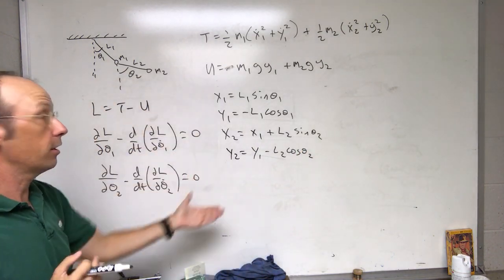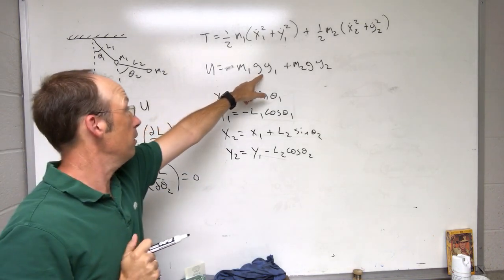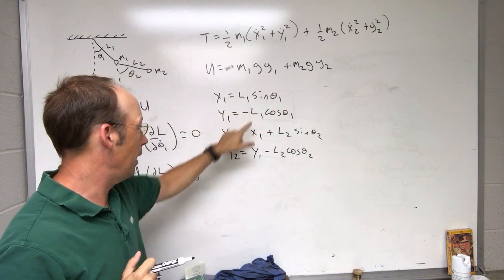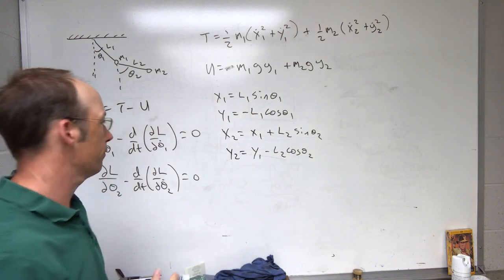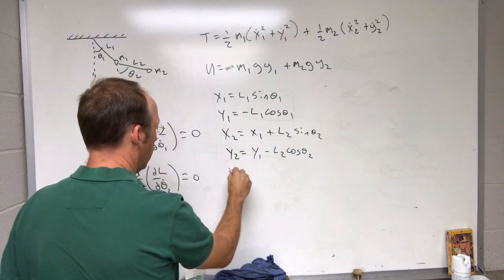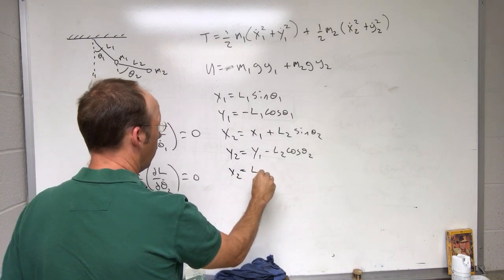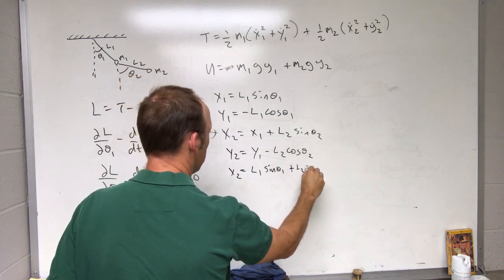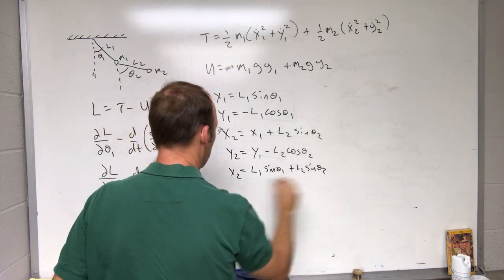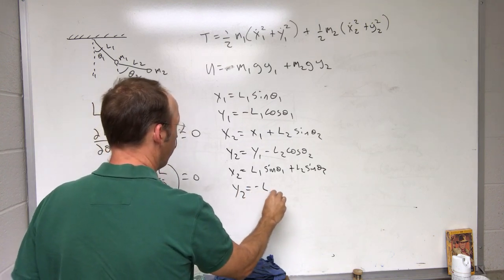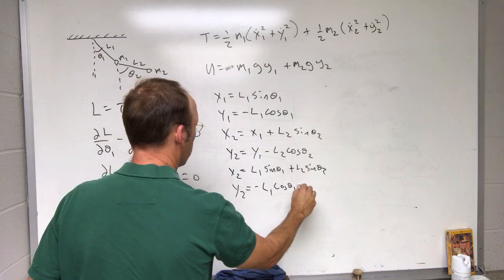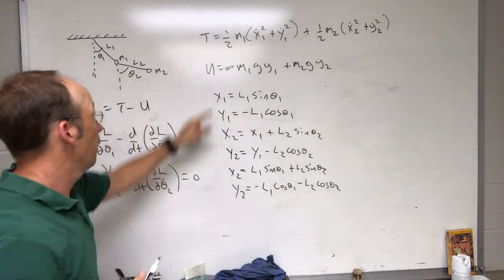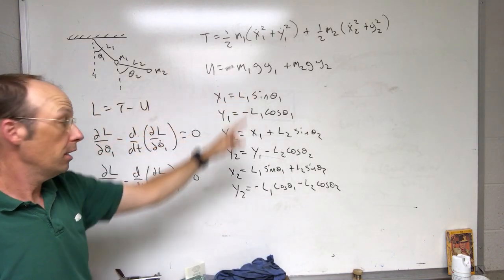Substituting, I can write these out fully: x2 equals l1·sin(theta 1) plus l2·sin(theta 2), and y2 equals negative l1·cos(theta 1) minus l2·cos(theta 2). So I have the Cartesian coordinates for both masses fully expressed in terms of theta 1 and theta 2. That's easy. Now the kinetic energy is where it gets tricky.